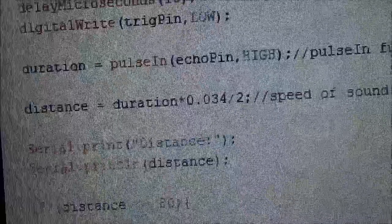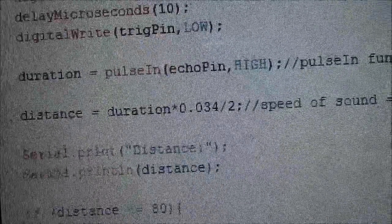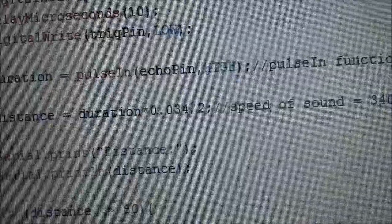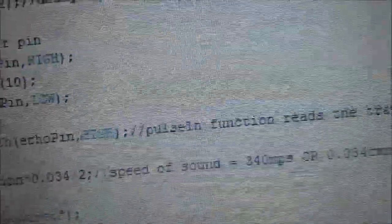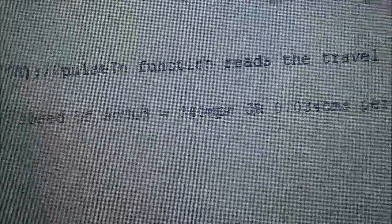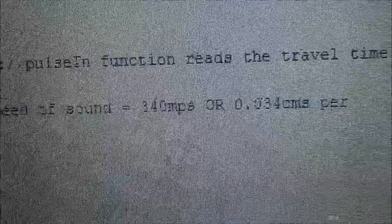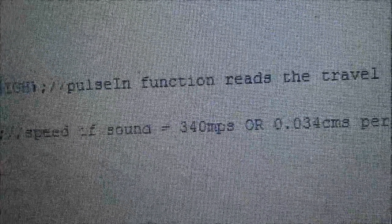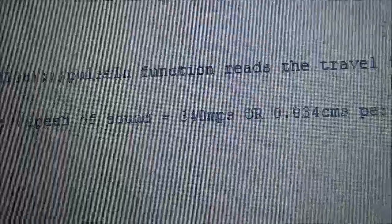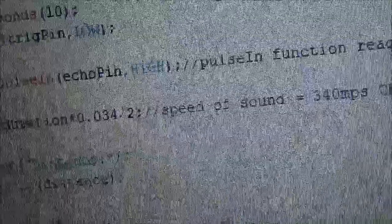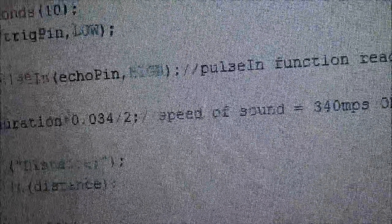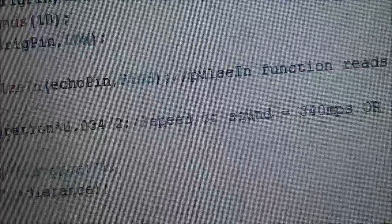Distance is equal to duration, which is the time, multiplied by the speed. So the speed of sound is 340 meters per second in air, or it can also be written as 0.034 centimeters per microsecond. So that's why I've written 0.034 since we are working here in microseconds and centimeters.